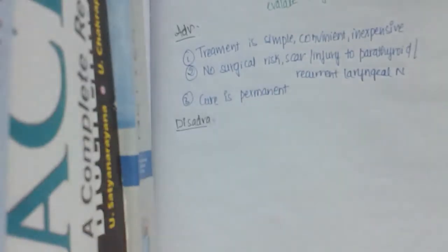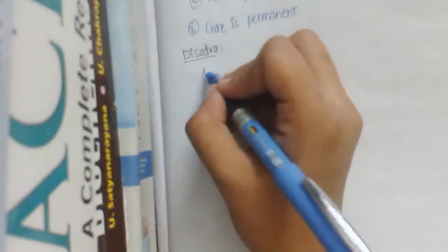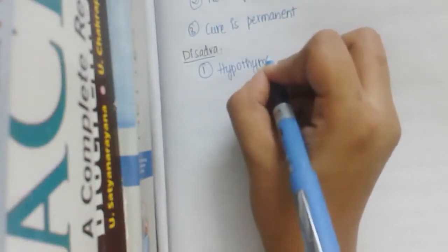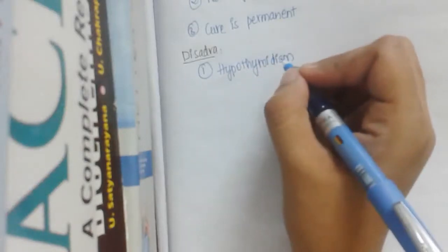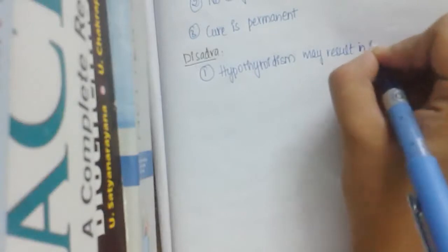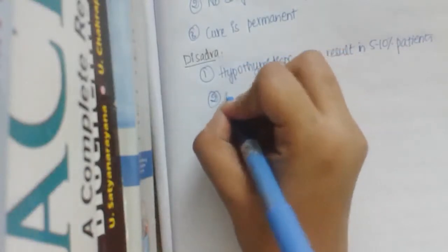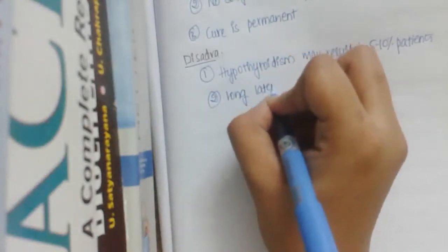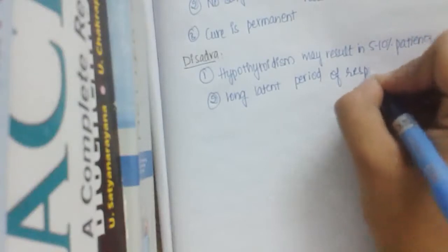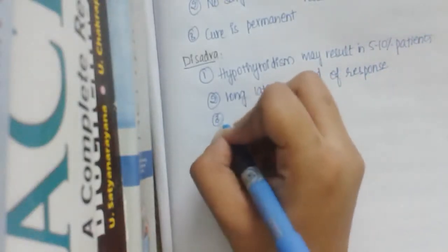Disadvantages are basically side effects. One, it may lead to hypothyroidism, may result in 5 to 10 percent of patients. Or it may have long latent period of response. It starts after two weeks, so if you have to control it right now you can't use this radioactive iodine.